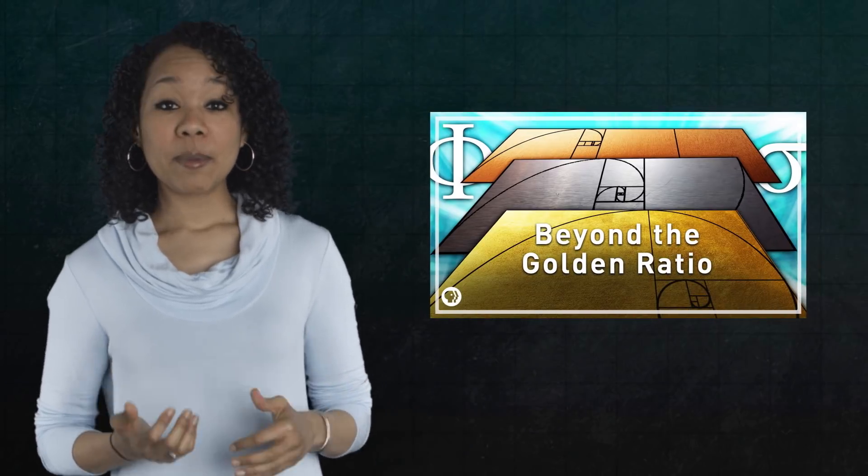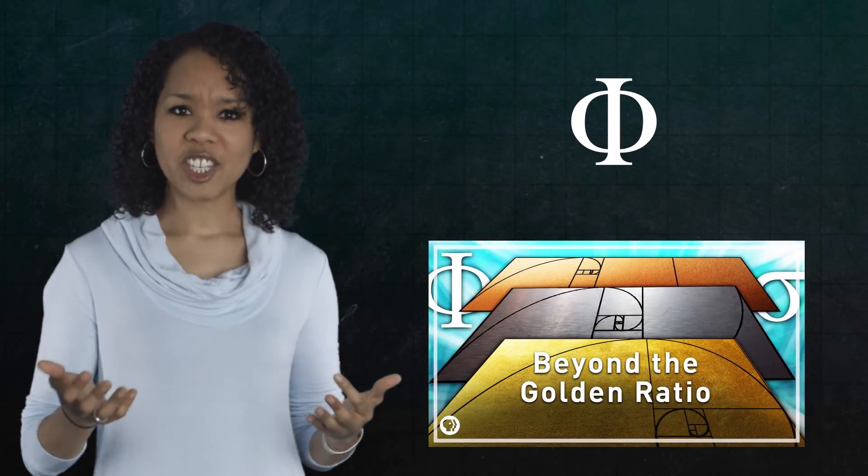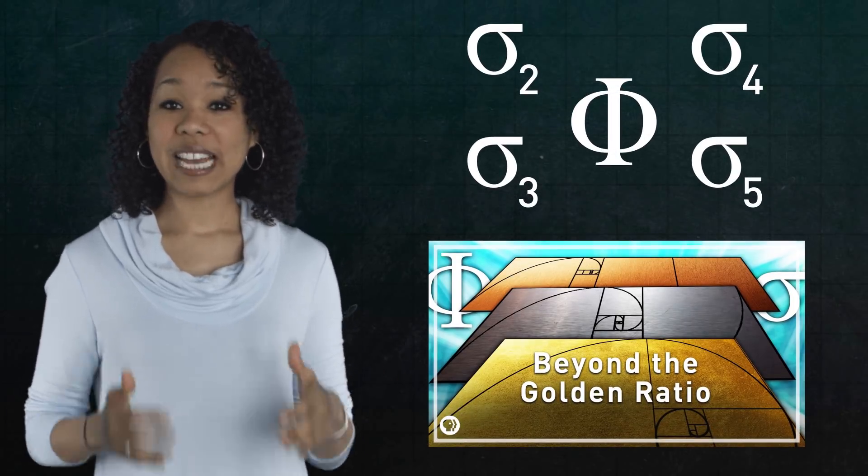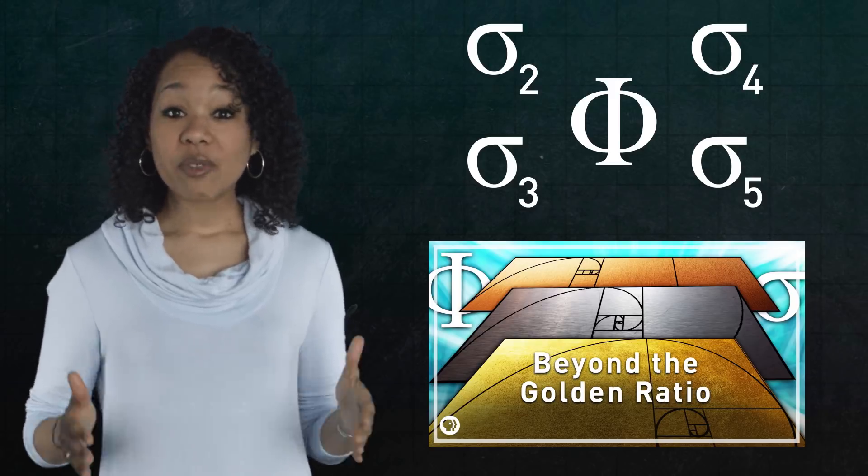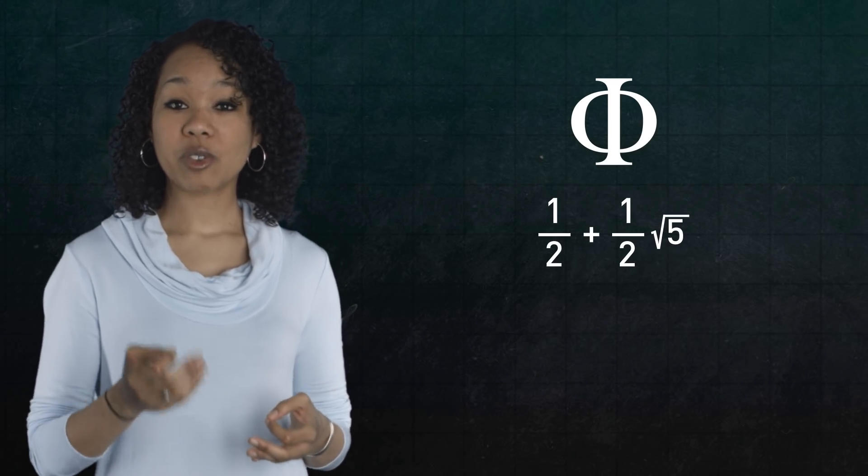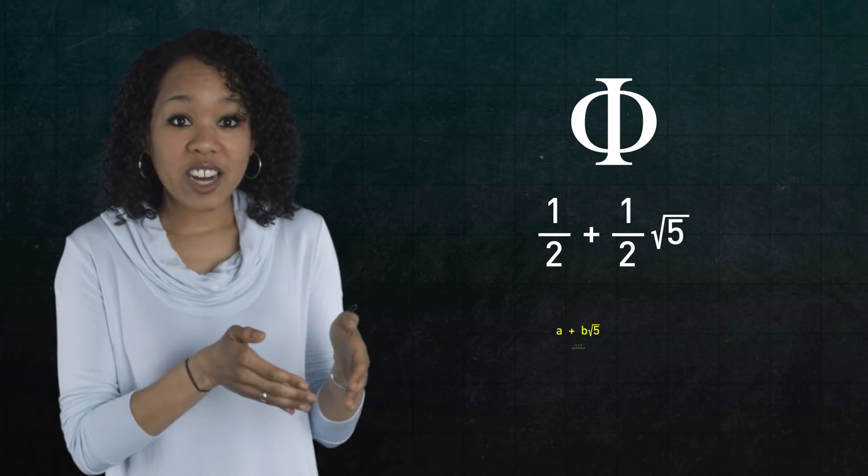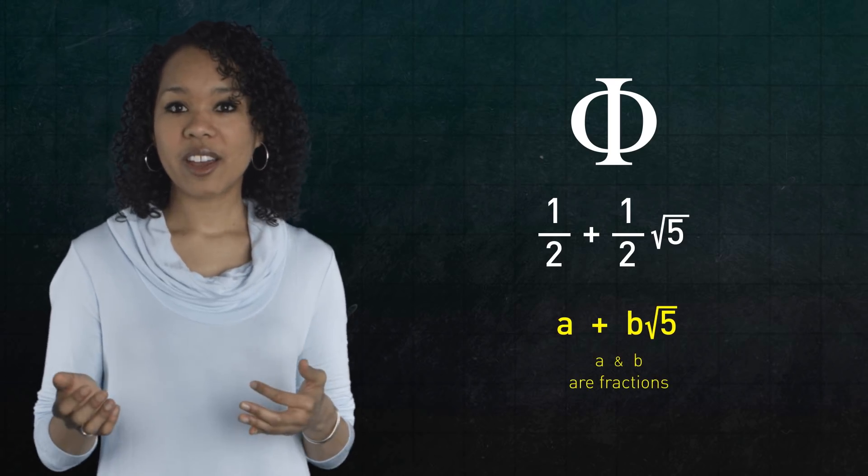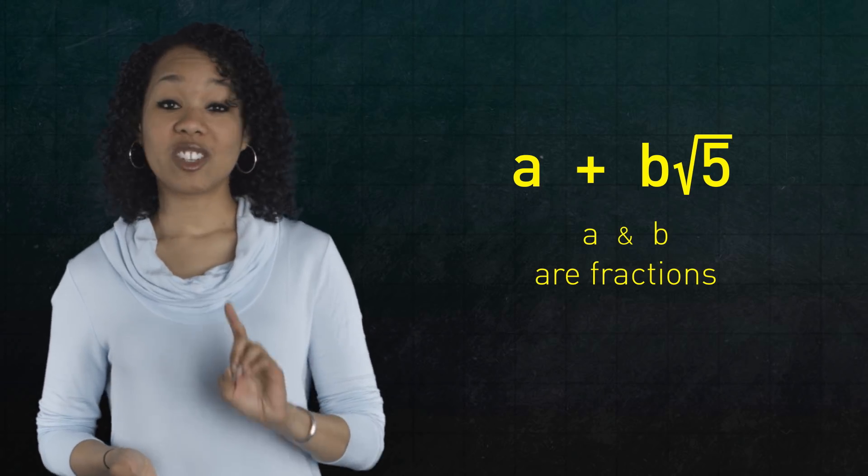Let's replace the integers by a different number system. In Gabe's episode Beyond the Golden Ratio, he explained how phi, the golden ratio, is just one of a family of metallic means. But the golden ratio also lives in a different family. Phi is the number one half plus one half times the square root of five. But what about other numbers of the form a fraction plus a fraction times the square root of five? There are infinitely many numbers of this form, and the golden ratio is just one of them.